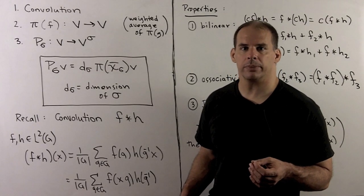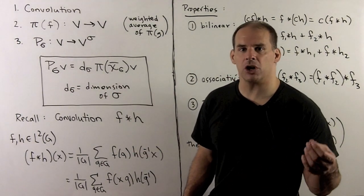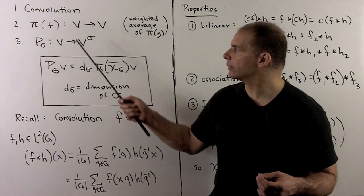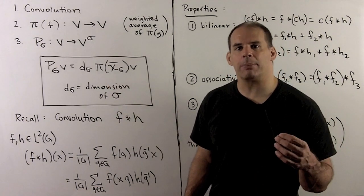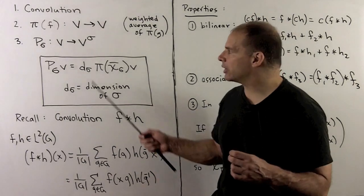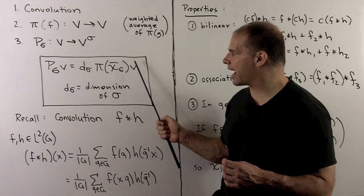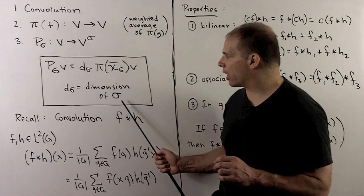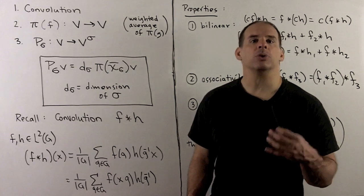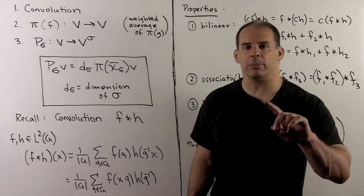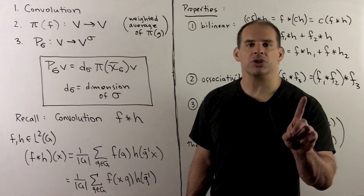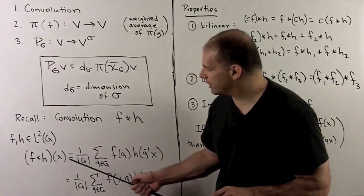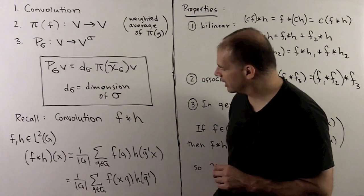Recall how the finite abelian case goes. We start with convolution, a type of multiplication on functions. If we pick an f in L2 of G, we could take the weighted average of our representation, and with that define projection operators onto the sigma types. That was given by taking the weighted average of the conjugate of the character of interest. For general finite G, we will have to put the dimension of sigma out in front. Now, the definitions are not going to change from before; we just have to be careful with positions of variables since we are working with non-abelian groups. If we have f and h, we define convolution as follows, and by a change of variables we can push x to the other function.